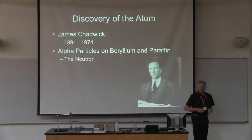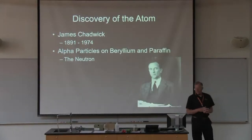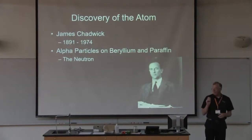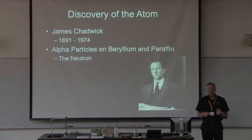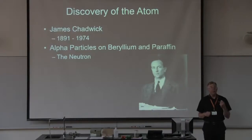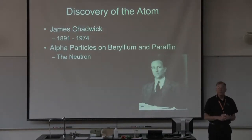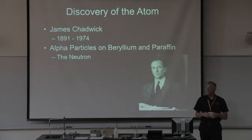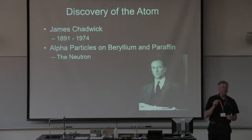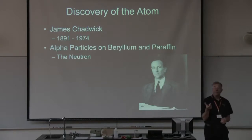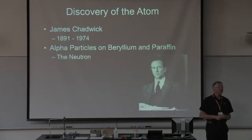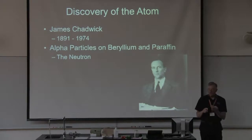Rutherford still had a problem — he couldn't account for all the mass. Electrons are almost massless, about one two-thousandth of the mass of a proton, and there was still about half the atom's mass missing. James Chadwick took alpha particles and bombarded beryllium atoms; the beryllium gave off a particle he fired into paraffin, and from that he discovered the neutron. Now we have the particles of the atom: protons and neutrons in the center, electrons on the outside, mostly empty space — now we can conceive of subatomic particles.